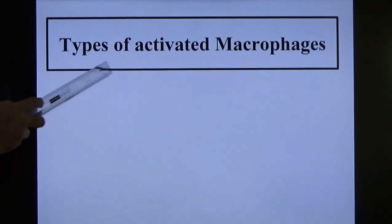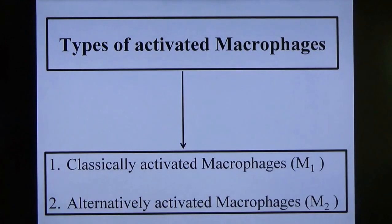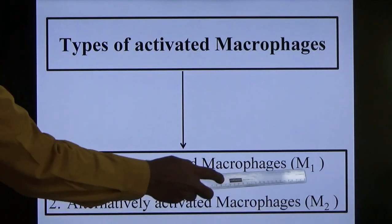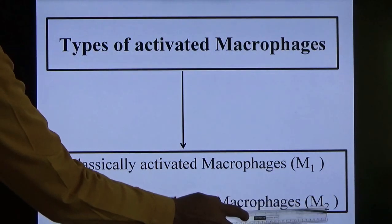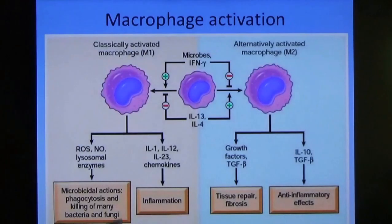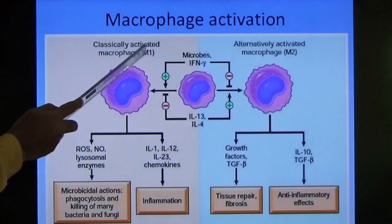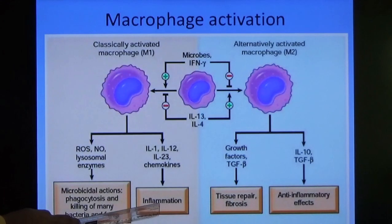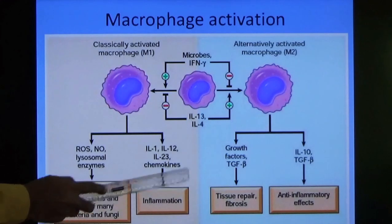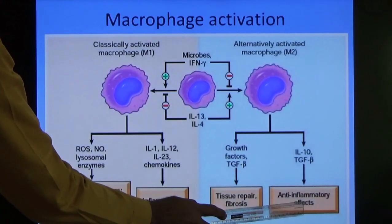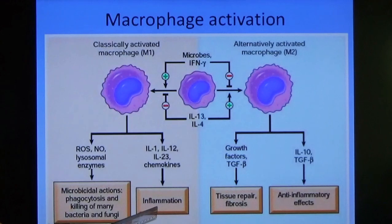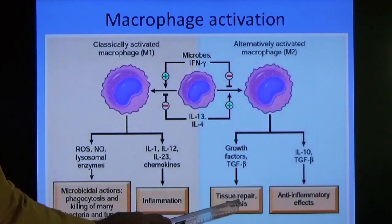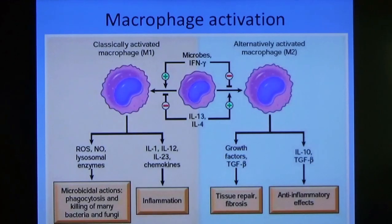There are two types of activated macrophages. Number one is classically activated macrophages, called M1 for short. Number two is alternatively activated macrophages, called M2. M1 cells are responsible for inflammation and chronic inflammation. M2 cells are responsible for anti-inflammatory effects, helping with tissue repair. The same cell has dual action: one for inflammation, another for tissue repair. This is why both characteristics — inflammation and repair — occur simultaneously in chronic inflammation.